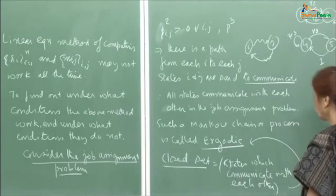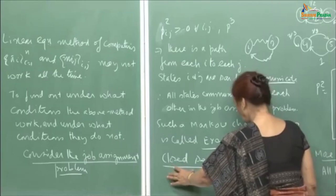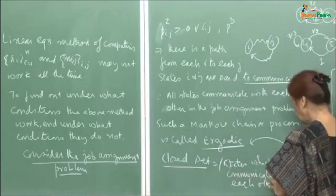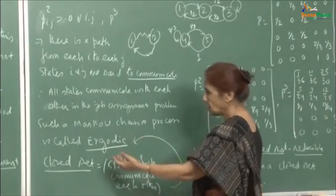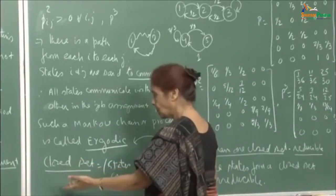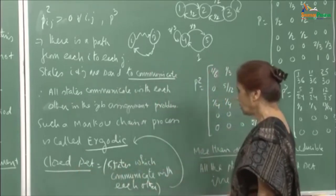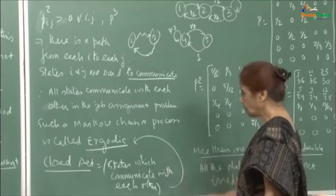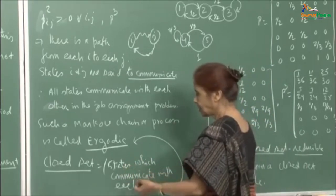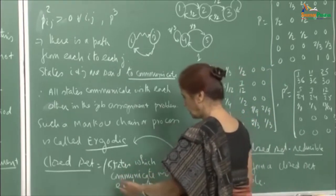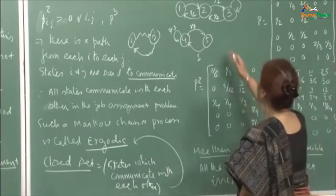Such a pair of states is said to communicate with each other. If all states communicate with each other, as with the job assignment problem where P_ij(2) is positive for all i,j, then all states communicate. Such a chain is called ergodic. We define a closed set as a set of states which communicate with each other. For the job assignment problem, the closed set consists of all states 1, 2, and 3. But it is possible to have more than one closed set, where all states may not communicate with each other.